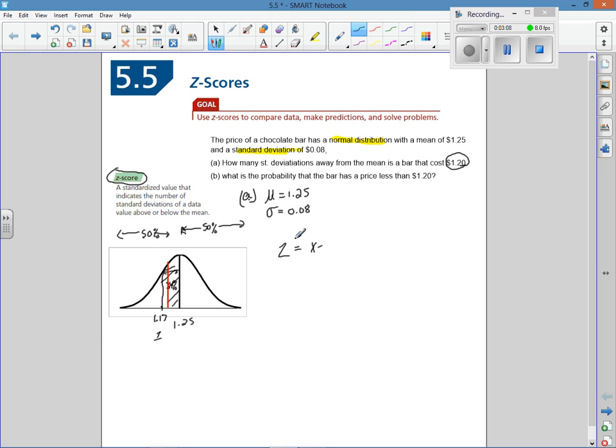To do so, you take your value that you're asked—in this case our X value will be $1.20. We take our $1.20, subtract it from our mean of $1.25, and divide by the standard deviation of 8 cents.